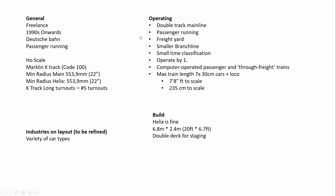Let's dive straight into the wish list of the client. The client wanted a double track mainline, passenger running, a freight yard, and a smaller branch line — basically he wanted everything. Luckily he did have 6.8 meters by two and a half meters, which for European standards is quite a large space.